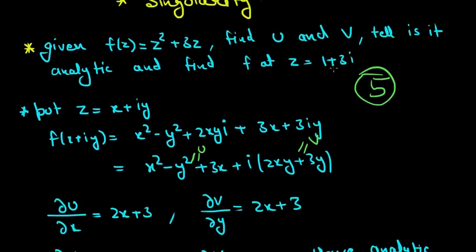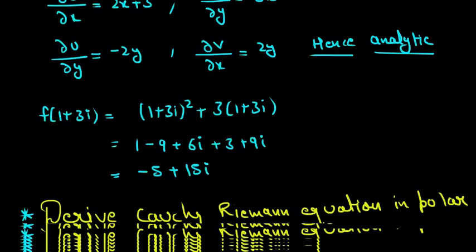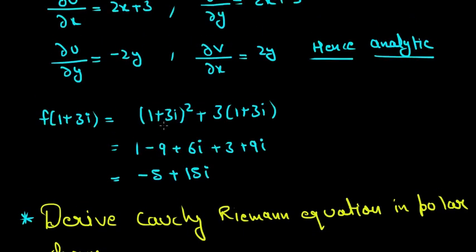Now we just have to put z equal to 1 plus 3i in the given equation. When we put it, we get 1 squared plus 3i squared, and i squared is minus 1, plus 2ab which is 6i, plus 3 plus 9i. 6i plus 9i is 15i, and solving this we get minus 5, so this was the answer.